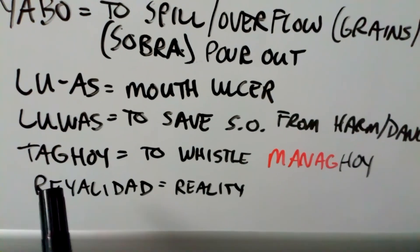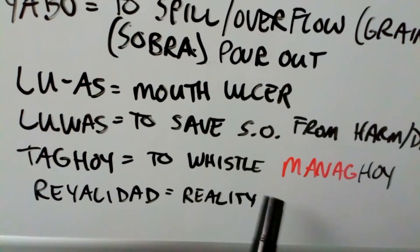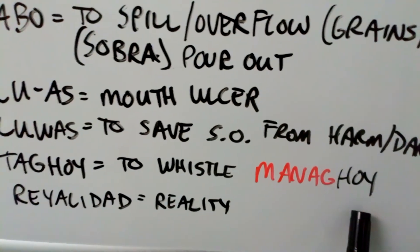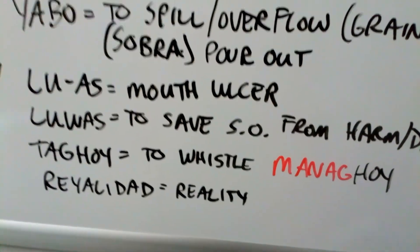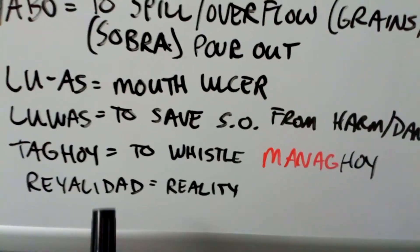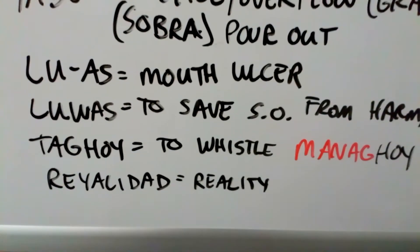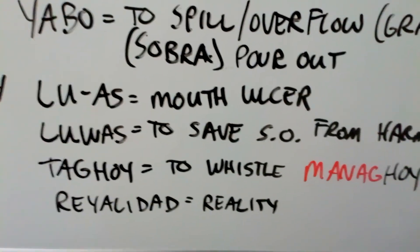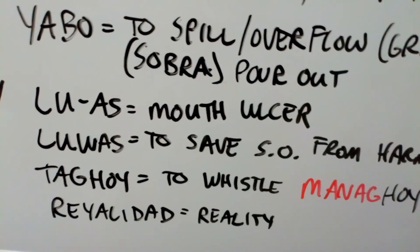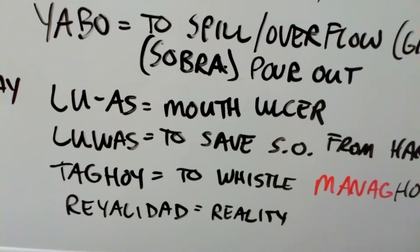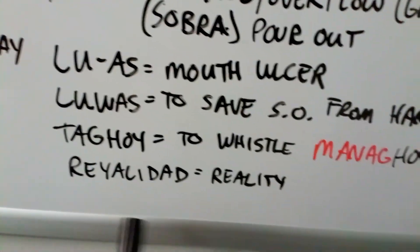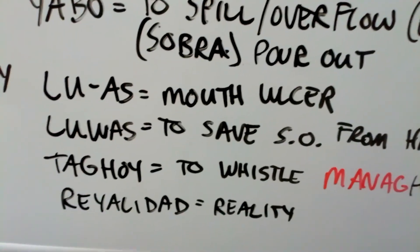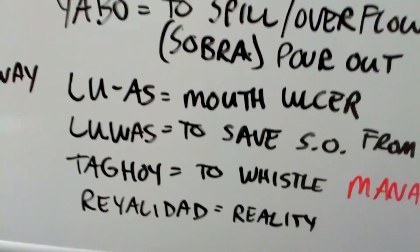And finally we have taghoy, which is to whistle. From managhoy — managhoy. Kinsan ng managhoy? Or kinsan ng naghoy? Who was whistling? The root word is taghoy — to whistle, like making whistling sounds in your mouth. That's taghoy. And then the last word — you already know it — is realidad, which is reality. Sa realidad, reality.